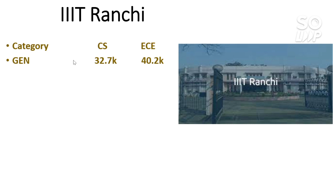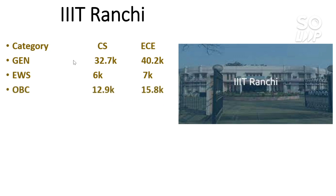The cutoff for IIIT Ranchi: for General category — CS 32,700 and EC 40,200. Some IIITs have separate male and female cutoffs, while others have only one cutoff. For EWS — CS 6,000 and EC 7,000. For OBC — CS 12,900 and EC 15,800. For SC — CS 9,600 and EC 10,600.